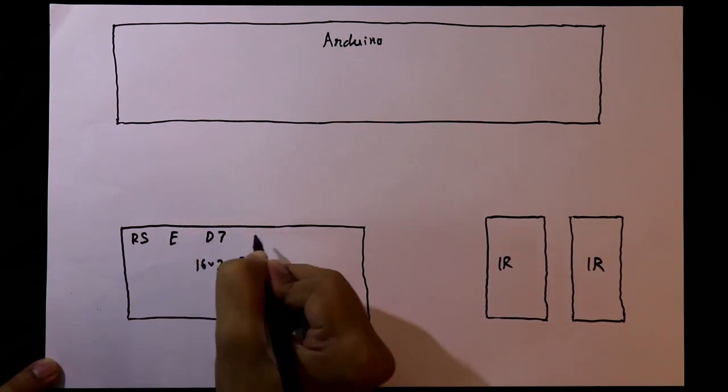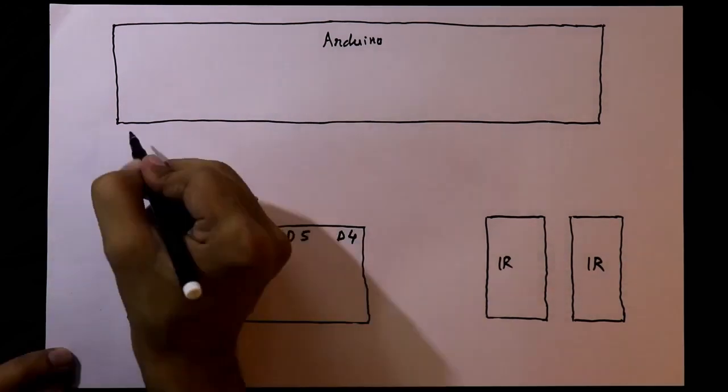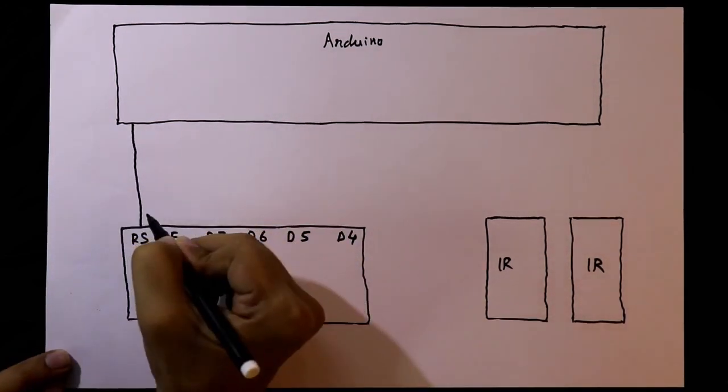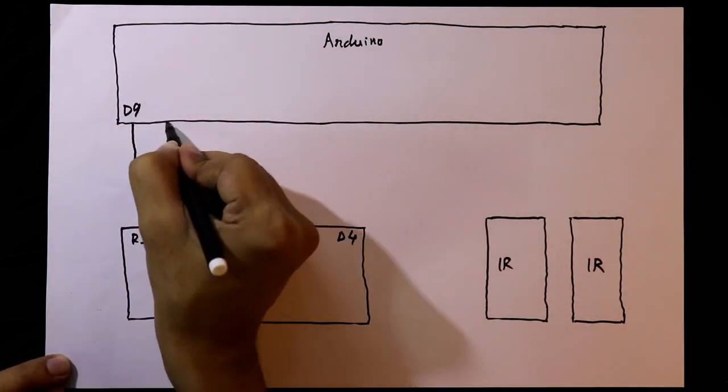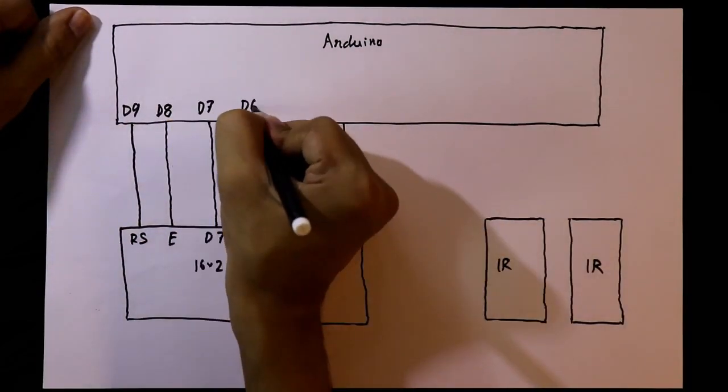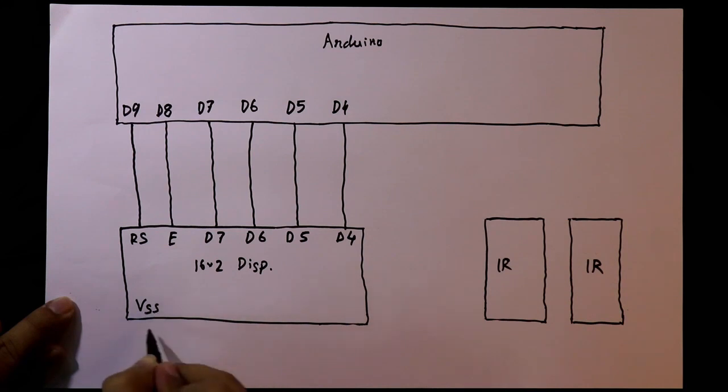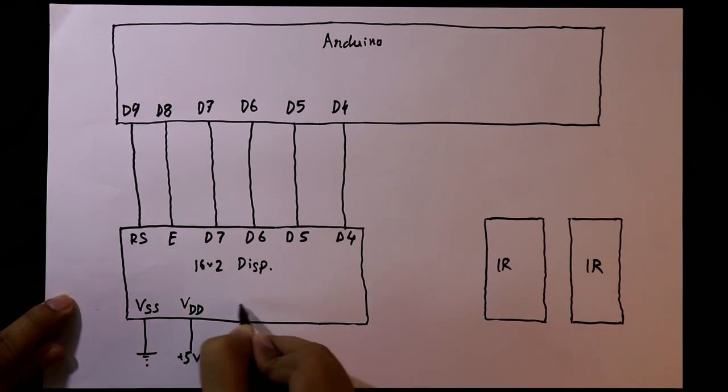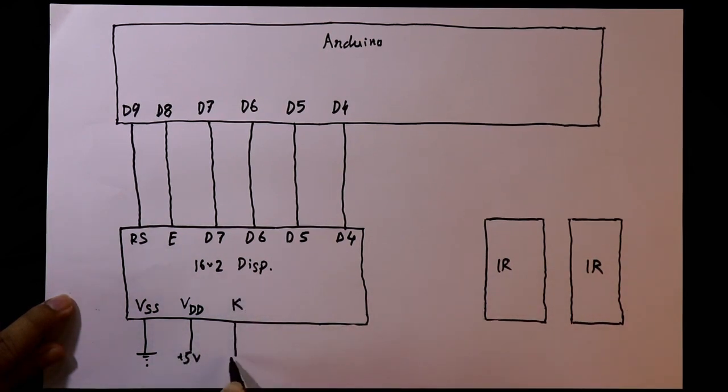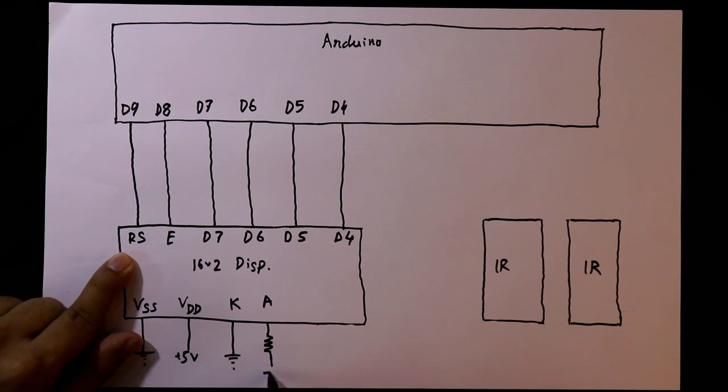This 6-pin will be connected to the Arduino. It is D9. VSS, it is ground. VDD to the plus 5V. Cathode of the LED will be connected to the ground. Anode of the LED will be connected to the plus 5V.